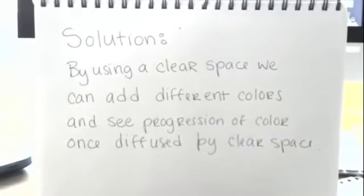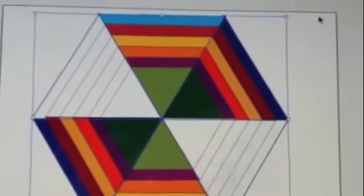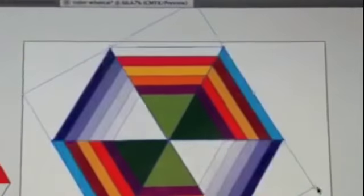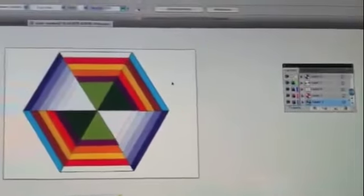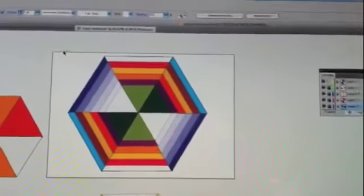Solution: by adding a clear space, we can add different colors to see the progression of color. So here, I'm taking the blue, and you can see how the blue gets lighter. Then unlocking the foil for the purple, and you can see how that can make the purple deeper.